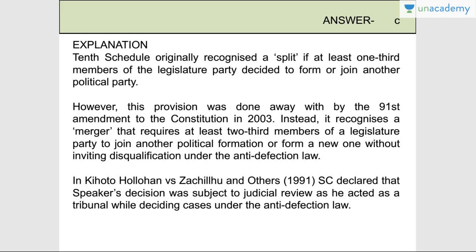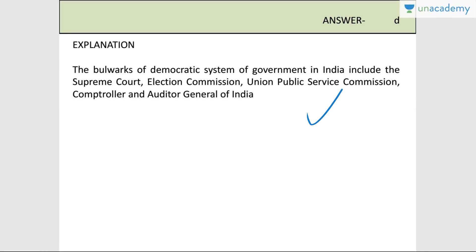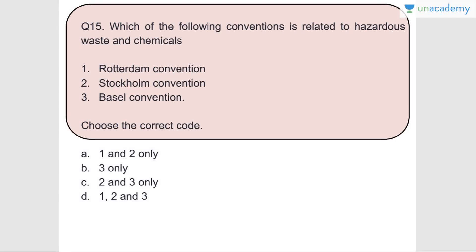In the Kihoto Hollohan versus Zachillhu case, the Supreme Court declared that the Speaker's decision was subject to judicial review as he acted as a tribunal while deciding cases under the Anti-Defection Law. Question number fourteen: Which of the following is considered a bulwark of the Indian democratic system? Answer is D - all four: the Supreme Court, Election Commission of India, UPSC, and Comptroller and Auditor General of India are considered bulwarks of the democratic system.